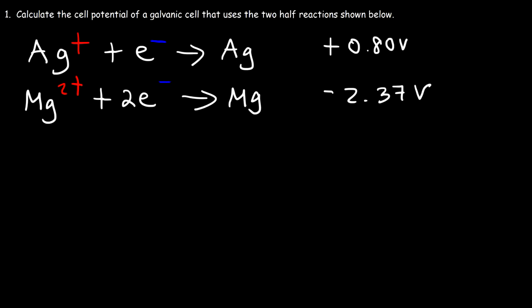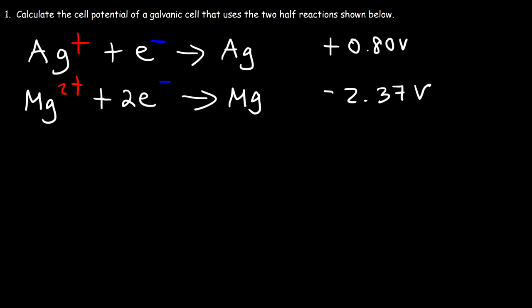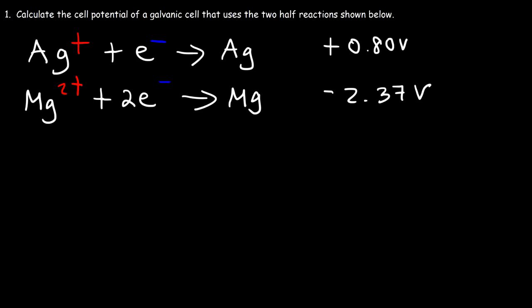We need to adjust it in such a way that the electrons are not on the same side of both reactions. For one half reaction, it has to be on the right side, and for the other, it has to be on the left side. We need to switch the right reaction such that the overall cell potential is positive. If we switch the first one, this would be negative 0.8. Negative 0.8 plus negative 2.37 will not give us a positive number. So that tells us that we need to reverse this reaction, because then we'll be adding two positive numbers.